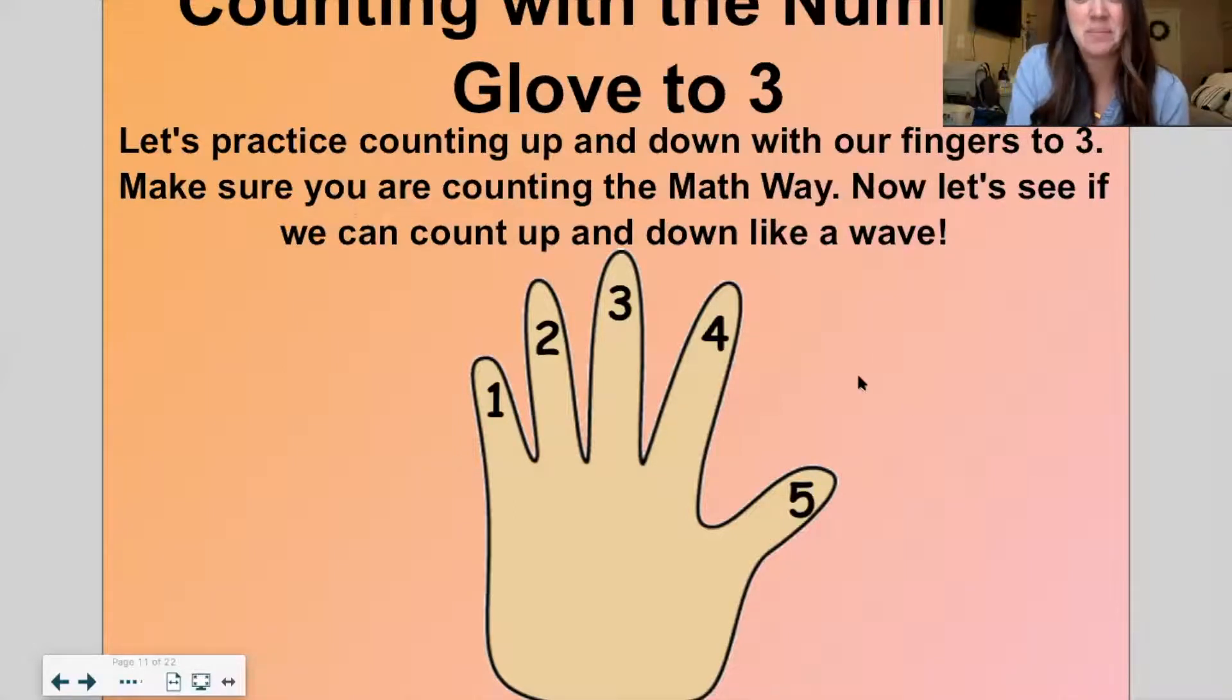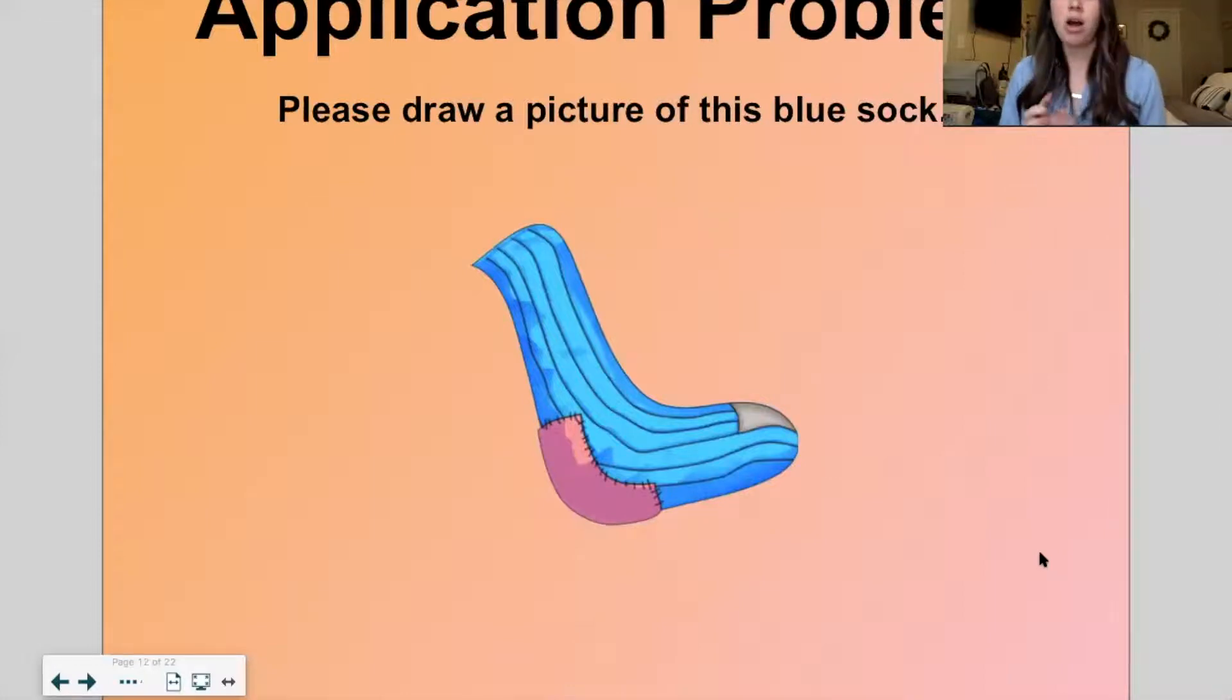All right. Let's get into our application problem for the day. So I want you to draw a picture of this blue sock. Pause and draw a picture. Hmm. Now I'm pause. Is your sock exactly the same as this sock? Maybe it is. Maybe it's not exactly the same. Maybe you forgot to draw this little part with the heel. Maybe you forgot to draw that little purple part. Maybe you forgot to draw this little gray part. That's where your toes go, right? Maybe you didn't put exactly as many stitches on that heel. And that's okay if you didn't do it exactly the same. That's okay. Chances are your picture isn't exactly the same as this.